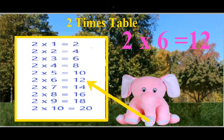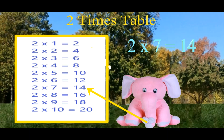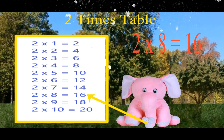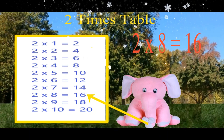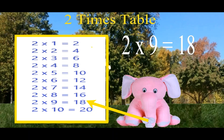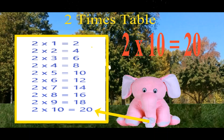2 7's are 14. 2 8's are 16. 2 9's are 18. 2 10's are 20.